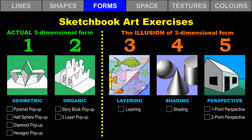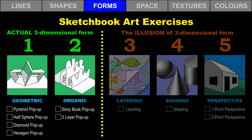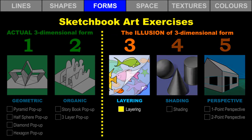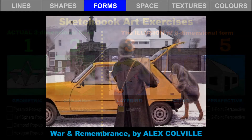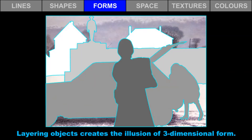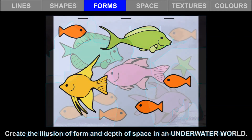Recall that when we think of forms in artwork, we can think of actual three-dimensional forms, or we can think of the illusion of three-dimensional forms. We created actual three-dimensional forms with the pop-up art exercises. Now, let's take a look at the illusion of form in three art exercises. We will start with layering to create the feeling of volume and form. Alex Coville is a famous Canadian artist. He created the illusion of three-dimensional space and depth by layering objects. Let's try it.